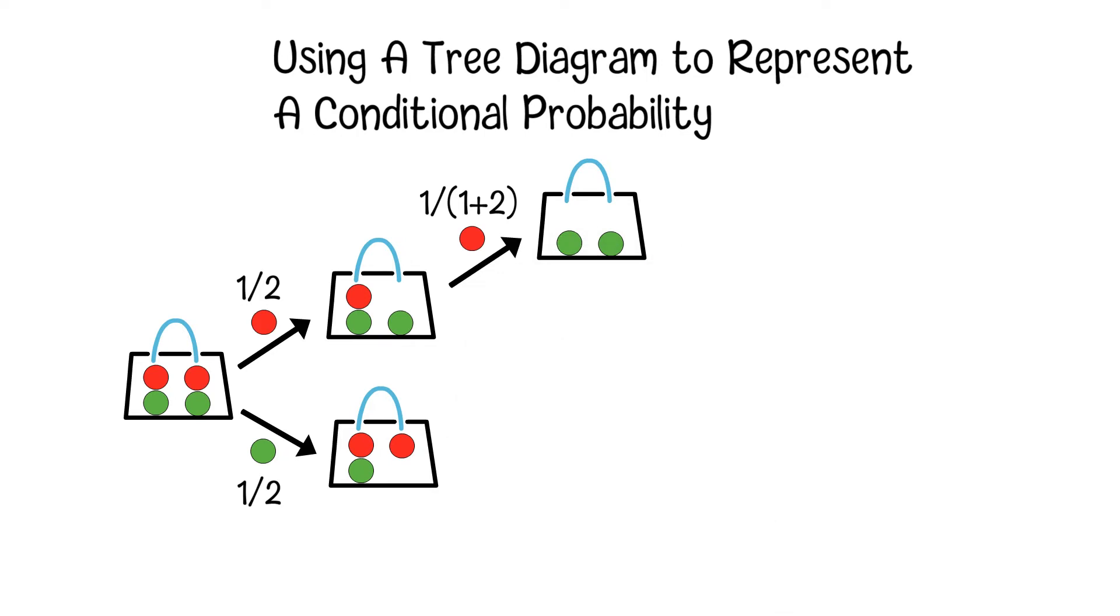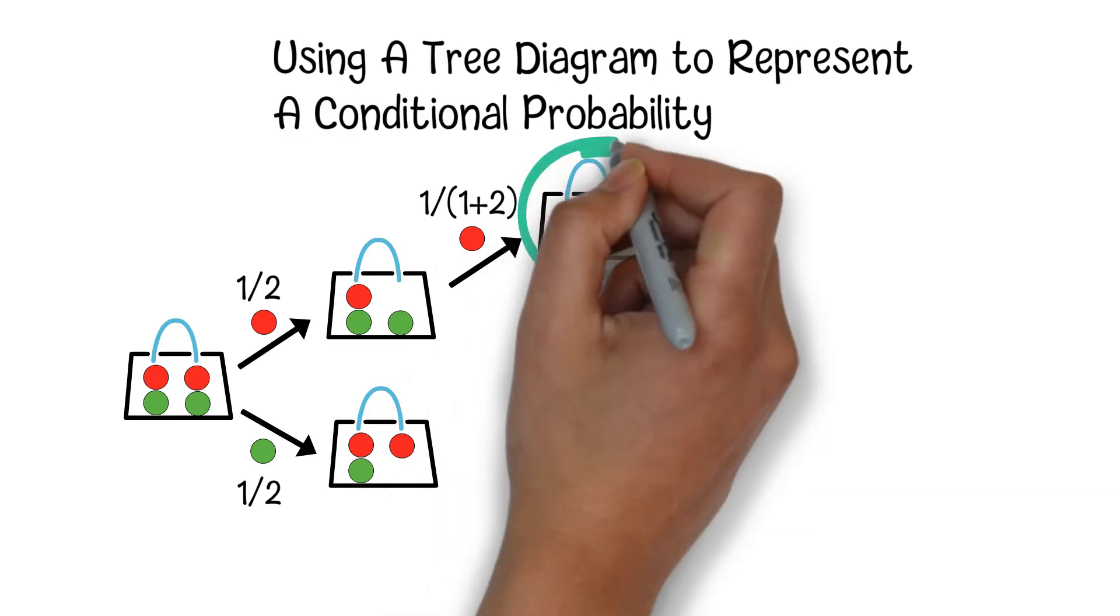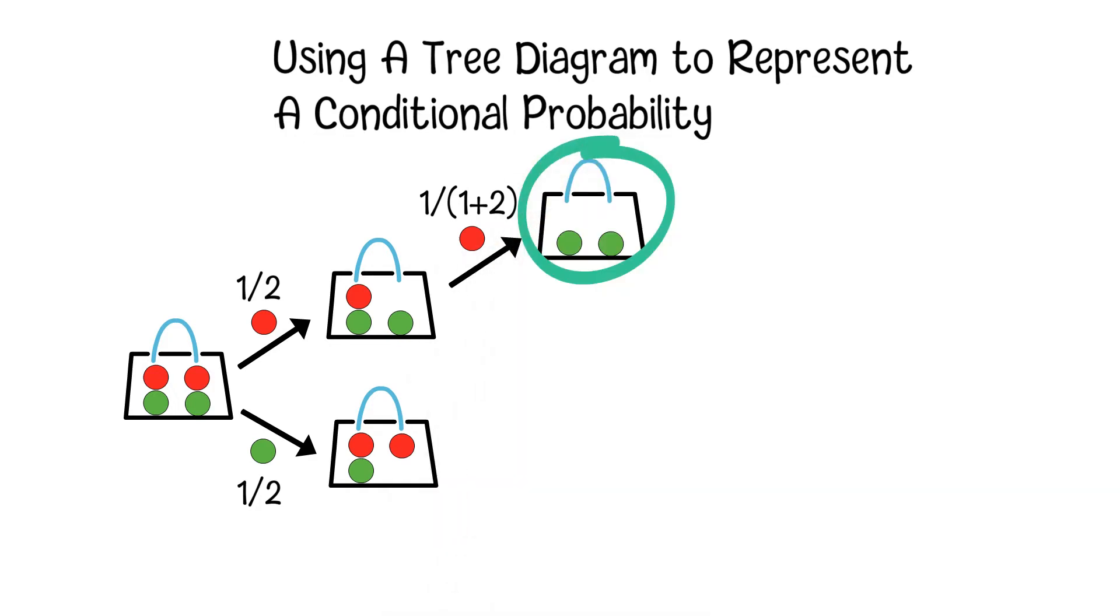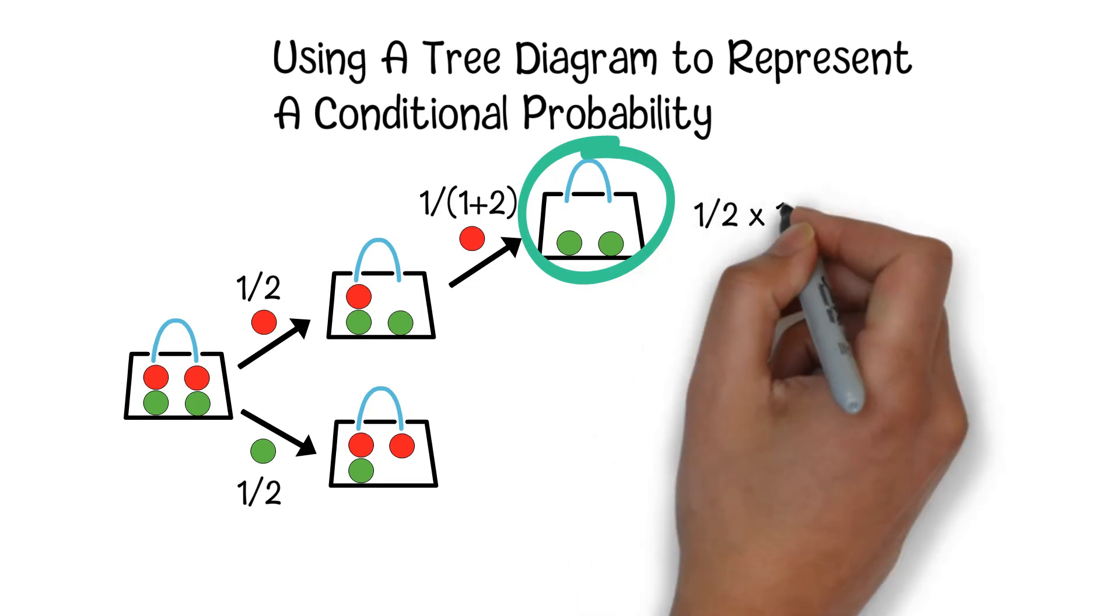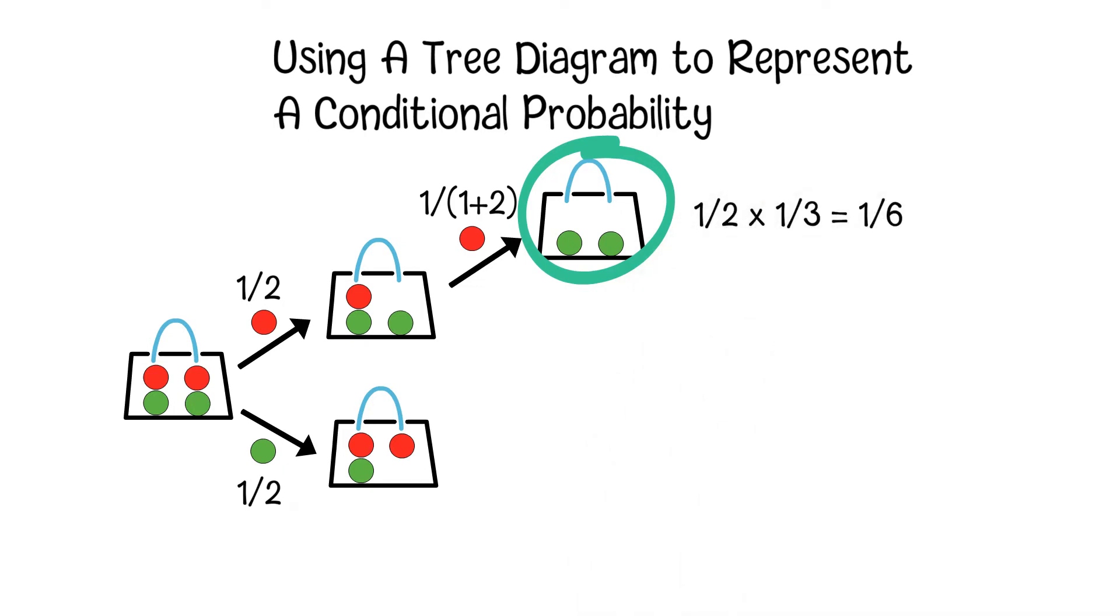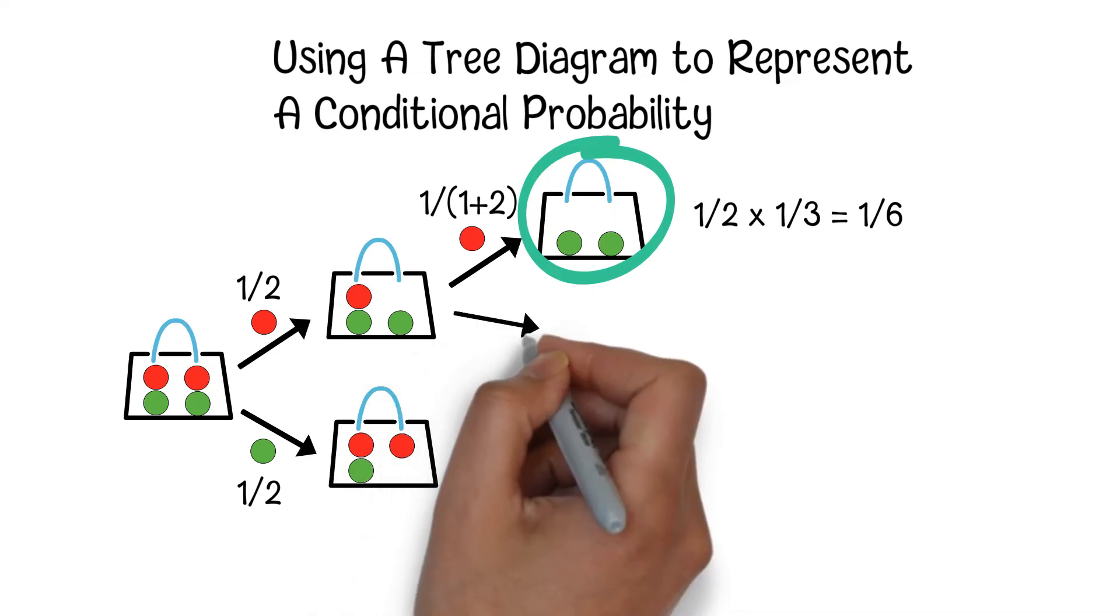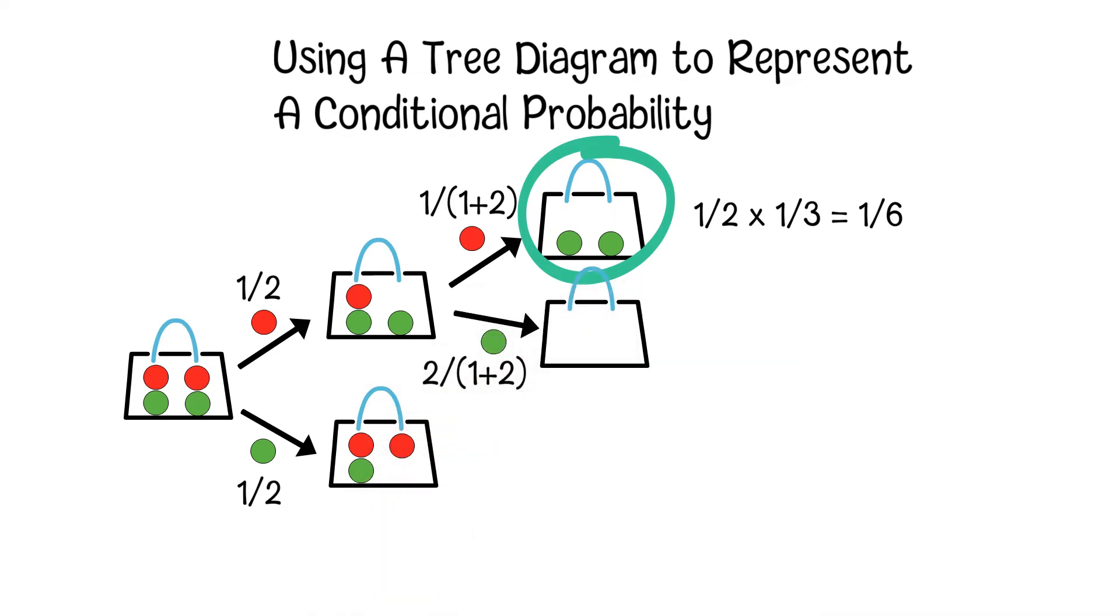So, if we want to know what is the final probability to get two red balls in the first two rounds, we can get the result by multiplying the two probabilities, which will be 1/2 × 1/3 equals 1/6. So, from a tree diagram, we can show each conditional probability on the branches of the tree.